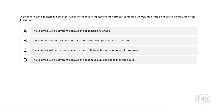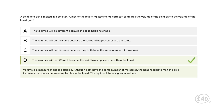Let's look at one from the physical science domain. A solid gold bar is melted in a smelter. Which of the following statements correctly compares the volume of the solid bar to the volume of the liquid gold? Volume is a measure of space occupied. Although both have the same number of molecules, the heat needed to melt the gold increases the spaces between molecules in the liquid. The liquid will have a greater volume — so this is the best answer.